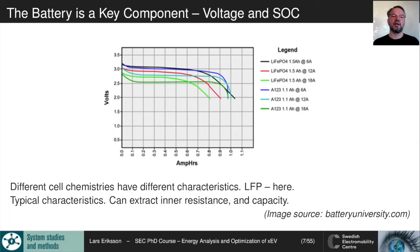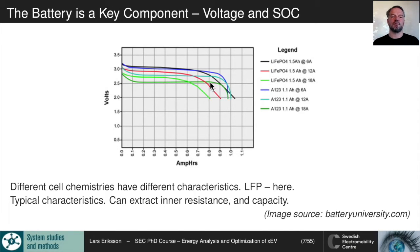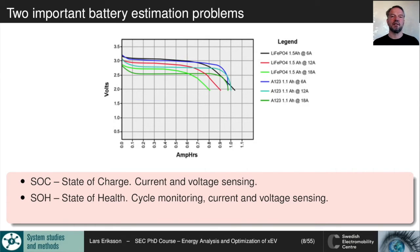In the hybrid and all-electric vehicle, the battery is a key component. Two batteries discharged at three different currents show that different cell chemistries have different characteristics — in this case both are LFP chemistry with essentially the same characteristics. From experiments we can extract inner resistance and capacity. State of charge estimation is important in practice to track remaining range in an all-electric vehicle.